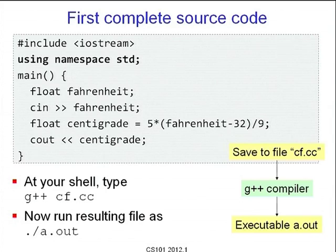We basically said that things like cin and cout you can compare them to people living in hostels. In particular, the hostel in this case is the namespace std, or the standard library. Either you have to refer to them by their full name giving the hostel number, or you say 'using hostel 5' and then whoever you refer to is by default in hostel 5. Then you write this main routine and you are allowed to use cin and cout, which are references to facilities inside the iostream library. You can save this to a file, which you can call cf.cc or any name you choose — by convention, ending with .cc or .cpp.